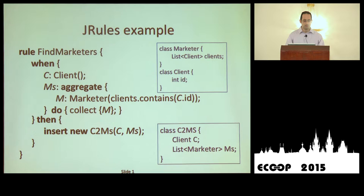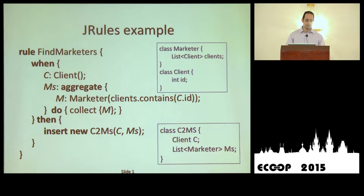This particular query is constructing the reverse mapping. It matches for every client that we're going to name C, and the semantics of the language are that it will be matched against every single working memory element in turn, so this rule will fire multiple times. We have an aggregate expression that searches over all working memory elements to find all marketers whose client list contains the client we care about, then constructs the reverse mapping of clients to the marketers that care about them.